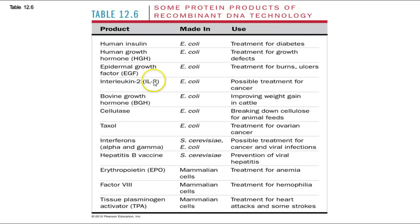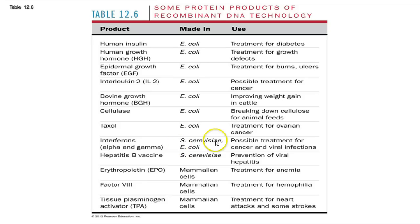There are a couple of other things listed here — some human products, and also bovine growth hormone for cows. Saccharomyces cerevisiae, which is yeast, can produce interferons, as well as E. coli, and these can be used to treat viral infections of various kinds. Some proteins have to be produced in mammalian cells like the ones listed here.